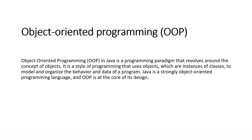Object-oriented programming is a programming paradigm that revolves around the concept of objects. It is a style of programming that uses objects, which are instances of classes, to model and organize the behavior and data of a program. Java is a strongly object-oriented programming language and OOP is the core of its design. In simple words, it is a style of programming where we can control the flow of data.